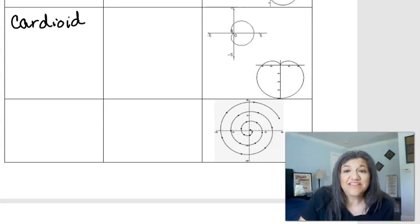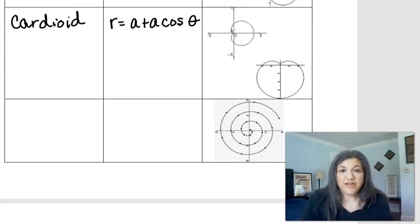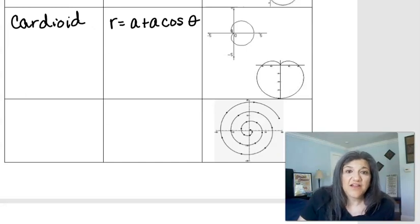And the cardioid has a similar equation to the limaçon. It's r equals a plus a cosine theta. So it actually results from a and b in the limaçon equation being equal. If a and b are equal, not one greater than the other.